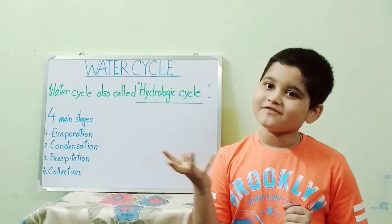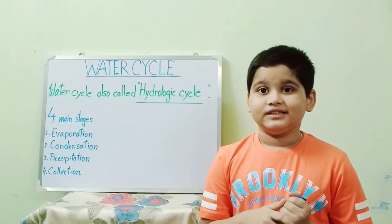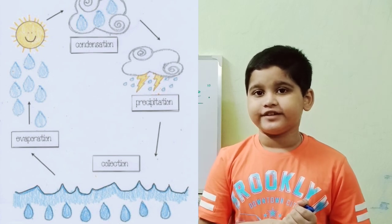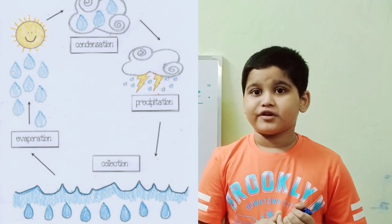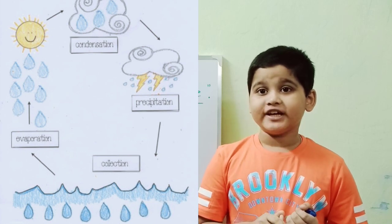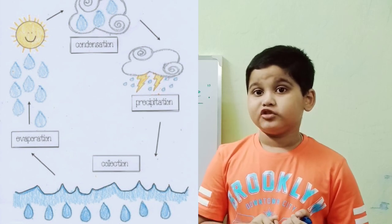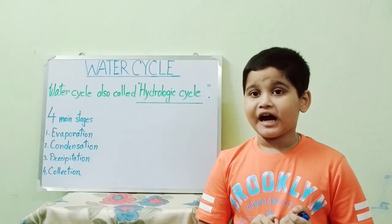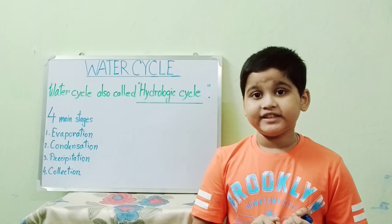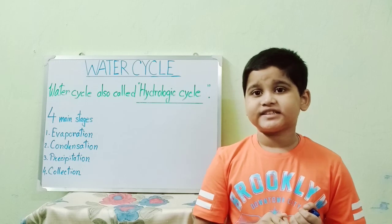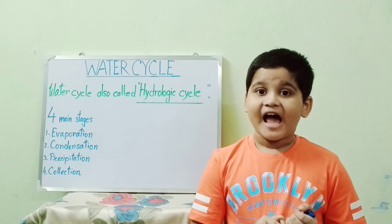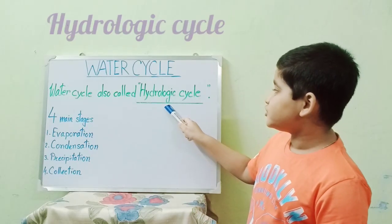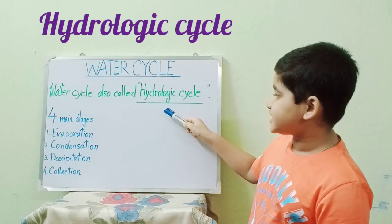What is the water cycle? The water cycle is the continuous journey water takes from the sea to the sky to the land and back to the sea. The movement of water around our planet is vital to life as it supports plants and animals. The water cycle is also called the hydrologic cycle.